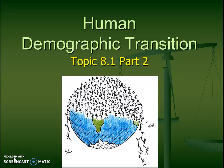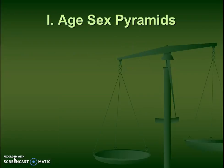Hello, IB environmental students. Today we're going to continue talking about human population, specifically we're going to be talking about demographic transition. When we talk about demographic transition, we're going to be really looking at age-sex pyramids, and we might have even started looking at this in class, or if you're taking geography, you might have seen this already.